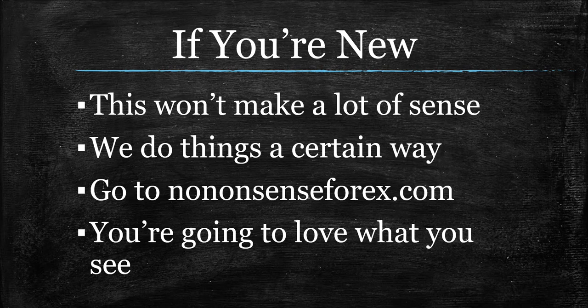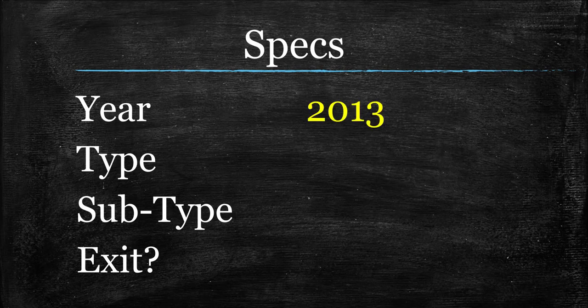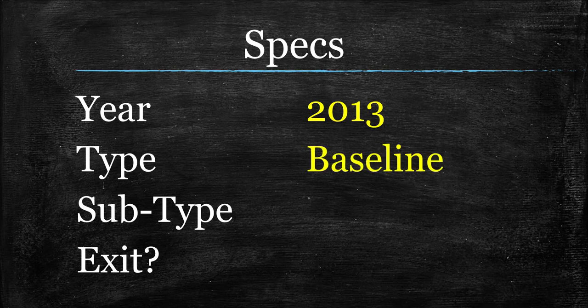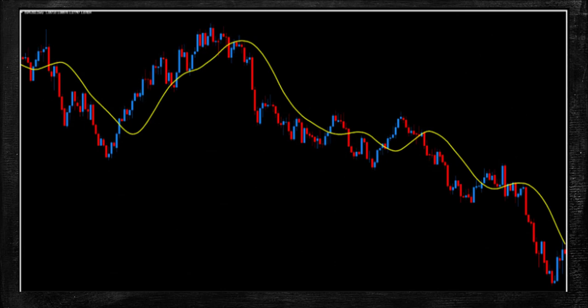For those who are caught up, let's go ahead and look at the specs for the Triangle Moving Average. The year is going to be 2013. I've known about this one for a while, and it just doesn't get talked about a lot. I've been kind of waiting for somebody to talk about it, and I just don't see much out there, so I'm excited to bring this one to you. It's going to be a baseline — just a standard run-of-the-mill baseline, as you'll soon see. And for exits, I don't recommend using a baseline as your exit indicator. I never have.